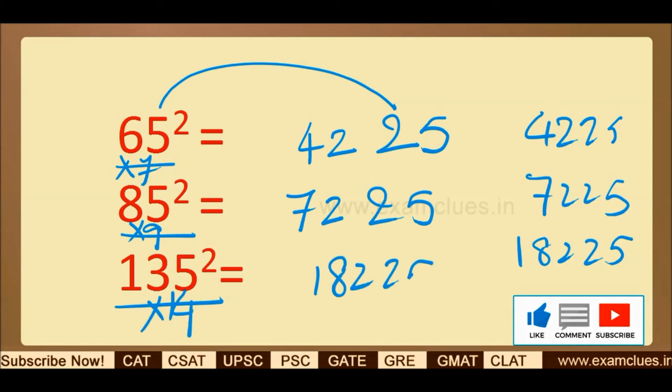I'll just do the recap. When you need to find the squares of numbers which end with five, step one is write 25, that is nothing but five square. Step two is multiply the number with its next integer: 6 into 7, 8 into 9, 13 into 14.